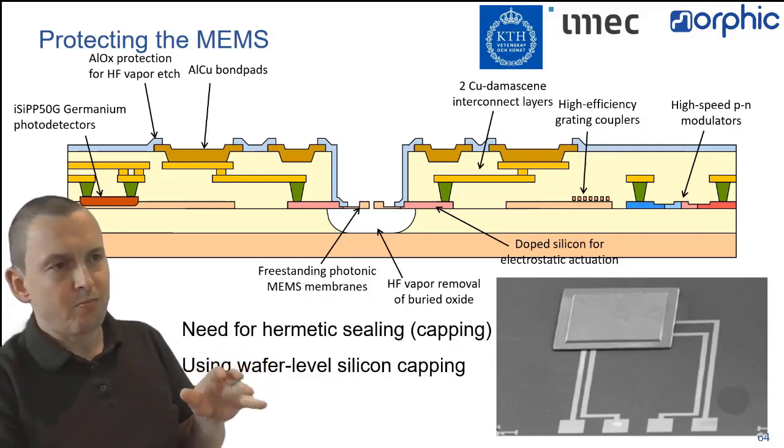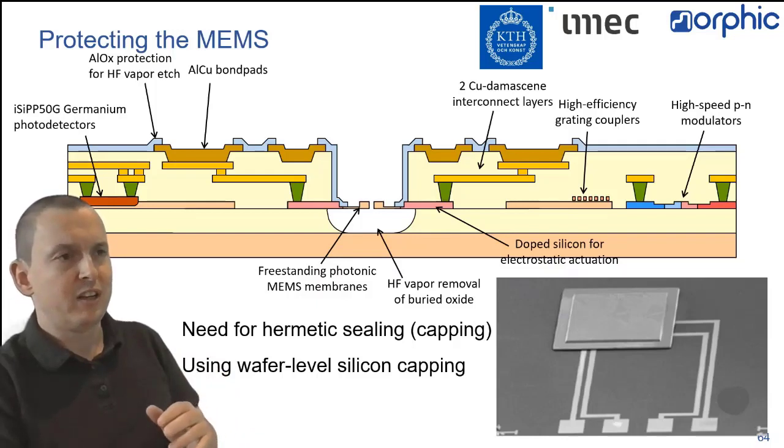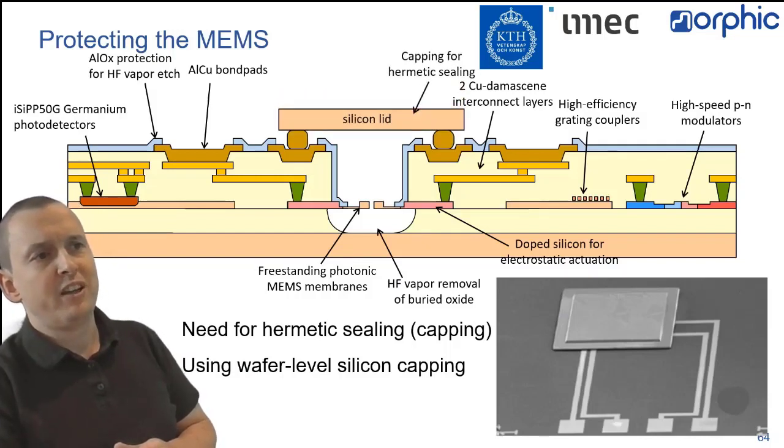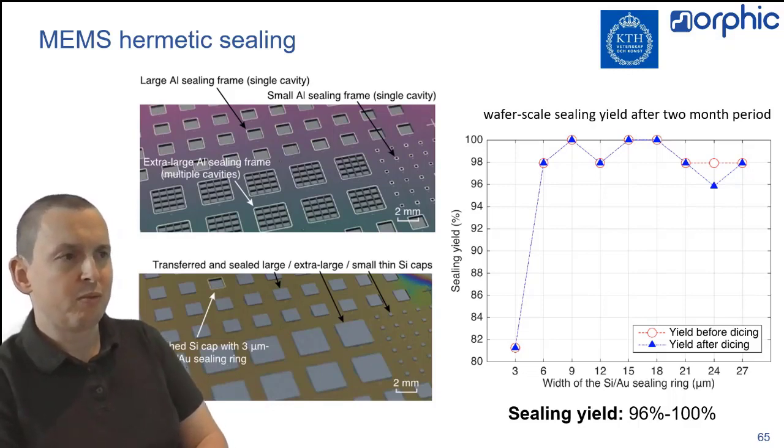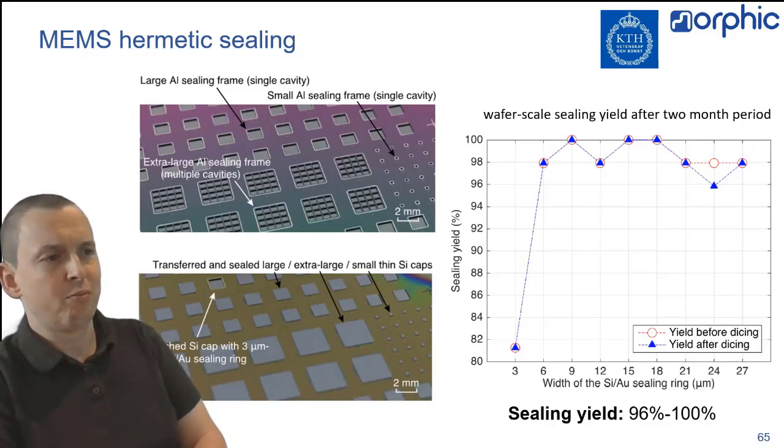So, if you have your MEMS, they're of course freestanding, so these are nice designs, but in practice you would want to make them hermetically sealed so that they're protected from the environment and they don't get damaged mechanically. So, as part of the project we're adding wafer-bonded silicon lids, which make it possible to seal in your MEMS inside the cavity. Now, these are some examples without optical components. So, at this point we don't have sealed devices yet with optical components, but the tests show that the yield after two months of cycling is pretty high, so you get really high sealing yield using these aluminum bond pads.